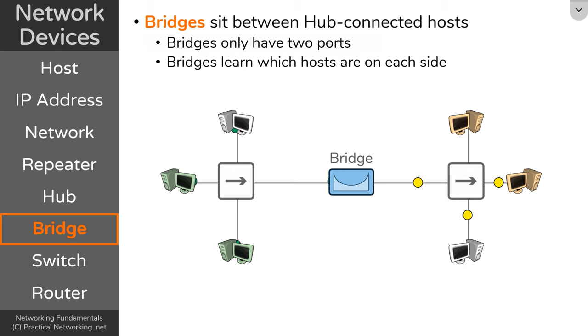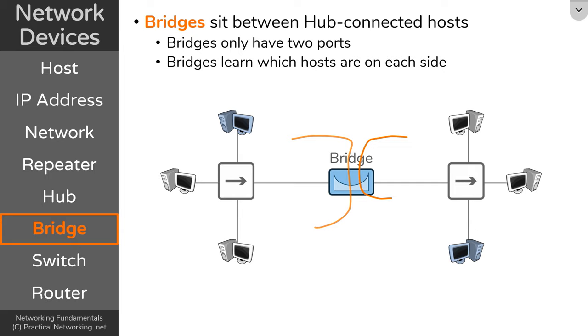On the other side, if these hosts need to speak to each other, they can also send packets to each other through their hub. And once again, the bridge will not let those packets bleed into the other side because it knows the yellow devices exist on the right hub. And of course, if this device needs to send something to a device on the other side, the bridge is going to know that traffic has to cross the bridge, and will allow that packet to traverse to the other side. The main takeaway is understanding that bridges can learn which hosts are connected on either side of their two ports.